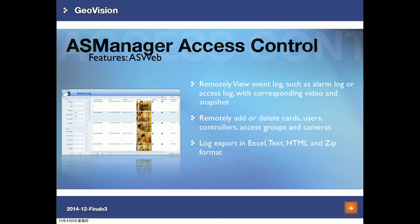For remote access, ASWeb lets you use a browser to connect to AS Manager remotely. You can view event logs such as alarm and access logs, view snapshots or video clips of events, and remotely add or delete cards, users, controllers, access groups, and cameras. You can also export queried logs in Excel, text file, HTML file, or ZIP file formats.